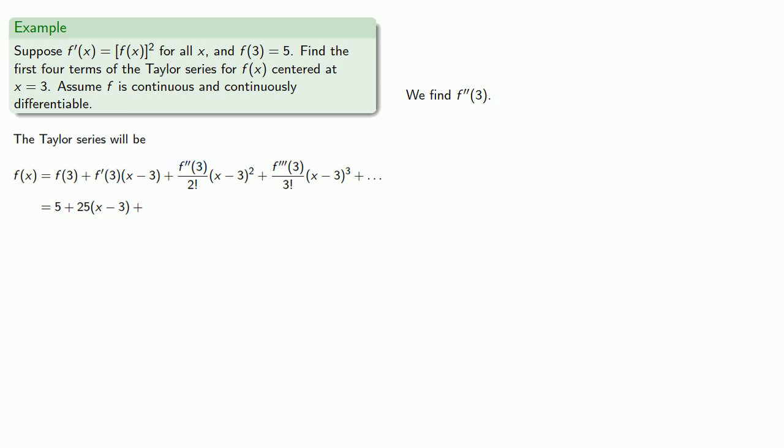We need to find the second derivative at 3. Fortunately, we're given our second derivative. Wait a minute. No, we don't have our second derivative. How could we find our second derivative if we don't know what our function is?